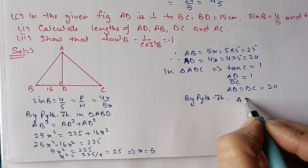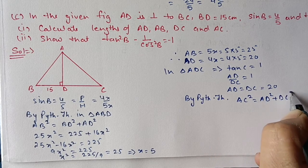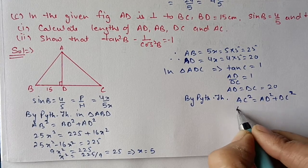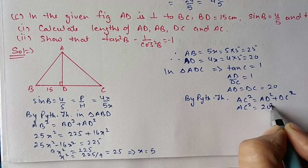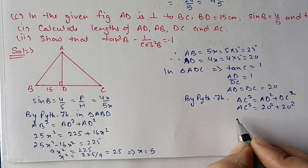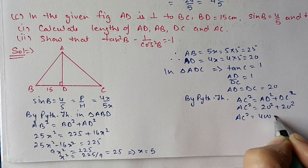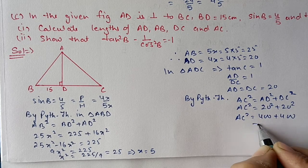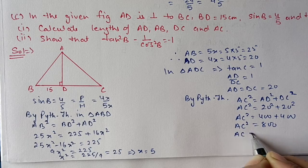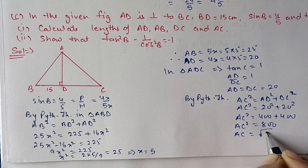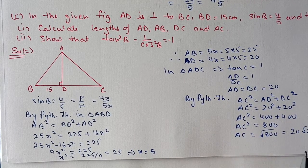Now we can find AC using Pythagoras theorem. AC² equals AD² plus DC² equals 20² plus 20² equals 400 plus 400 equals 800. So AC equals root of 800, which after simplification gives 20 root 2.